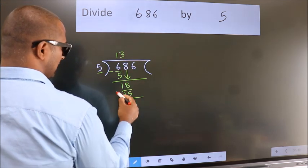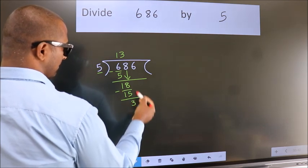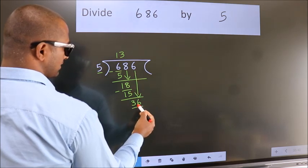Now we subtract. We get 3. After this, bring down the beside number. So 6 down. So 36.